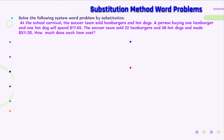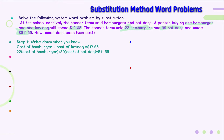If you recall from our graphing word problems, the first step of all word problems is to write down what you know. We know that a person buying one hamburger and one hot dog will spend $17.65. We also know that they sold 22 hamburgers and 39 hot dogs and made $511.55 in total. So I can write those as equations: the cost of one hamburger plus the cost of one hot dog equals $17.65, and 22 times the cost of a hamburger plus 39 times the cost of a hot dog equals $511.55.